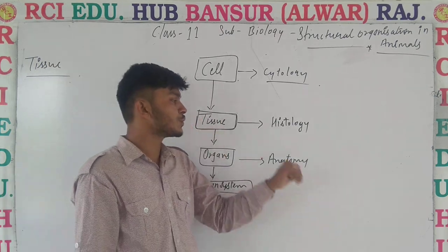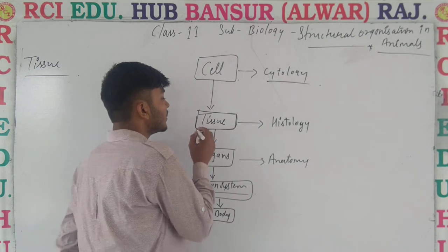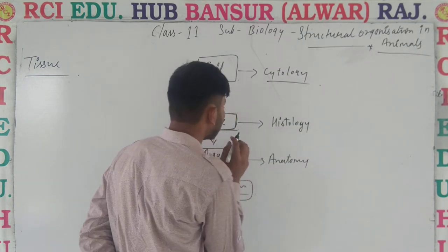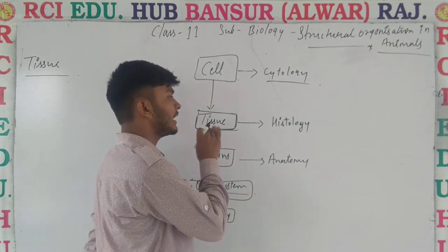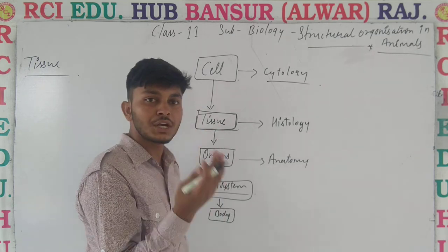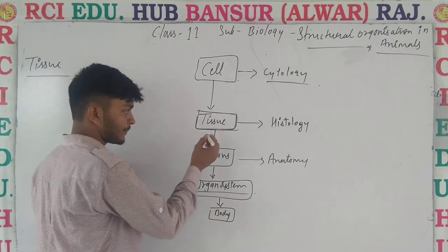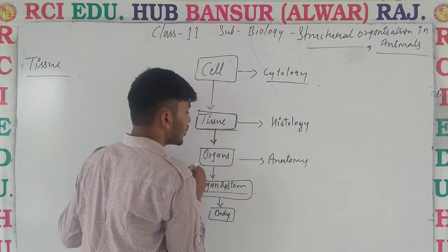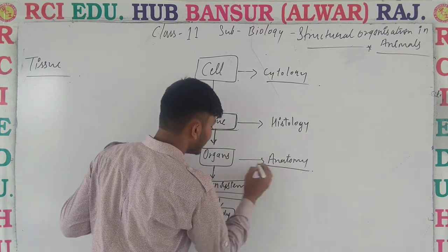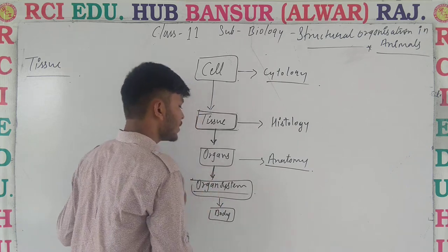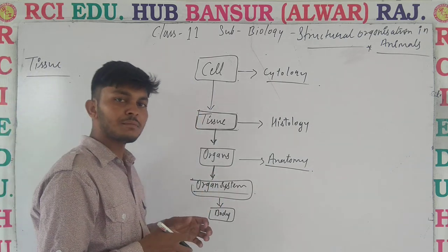In this chapter we will talk about tissues in detail — their types and functions. The study of tissue is known as histology. Tissues, after forming, create organs. Organs together form systems, and there are different systems in our body. So in this chapter we will talk about tissues.